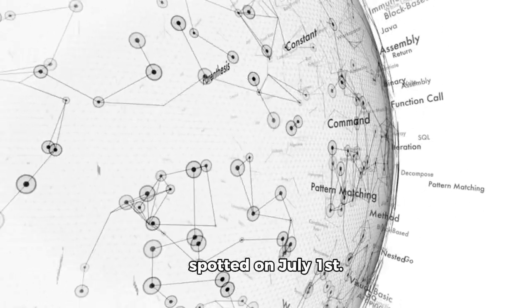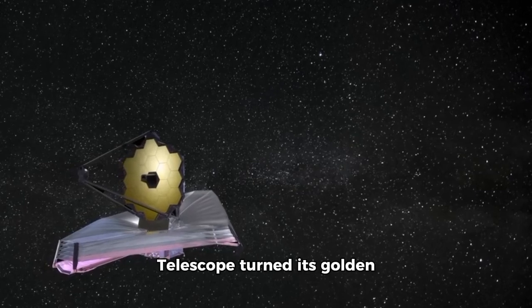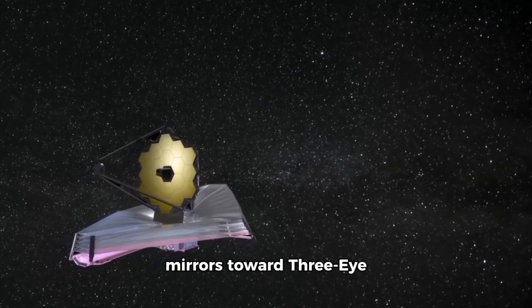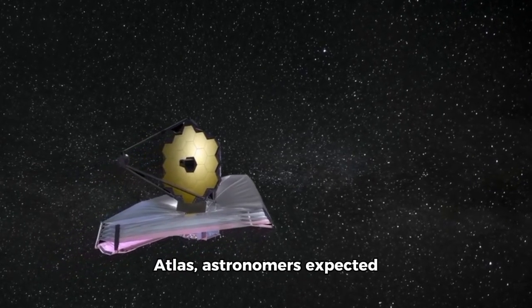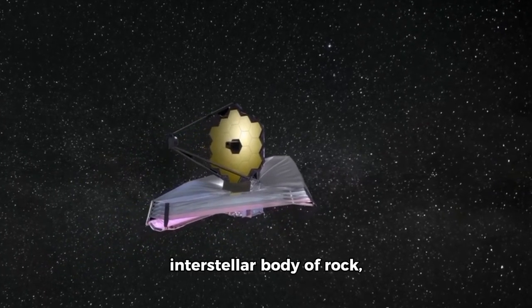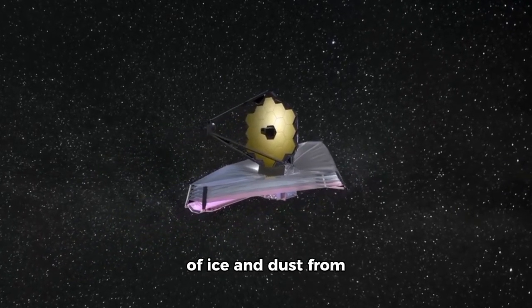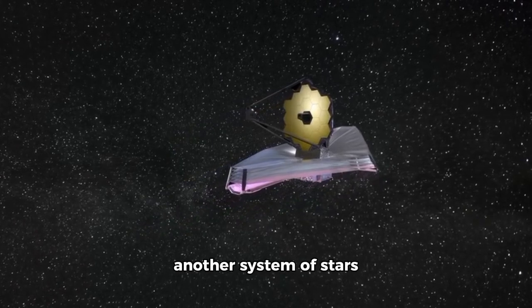When the James Webb Telescope turned its golden mirrors toward 3i Atlas, astronomers expected to find a small interstellar body of rock, perhaps a remnant composed of ice and dust from another system of stars passing through the void.